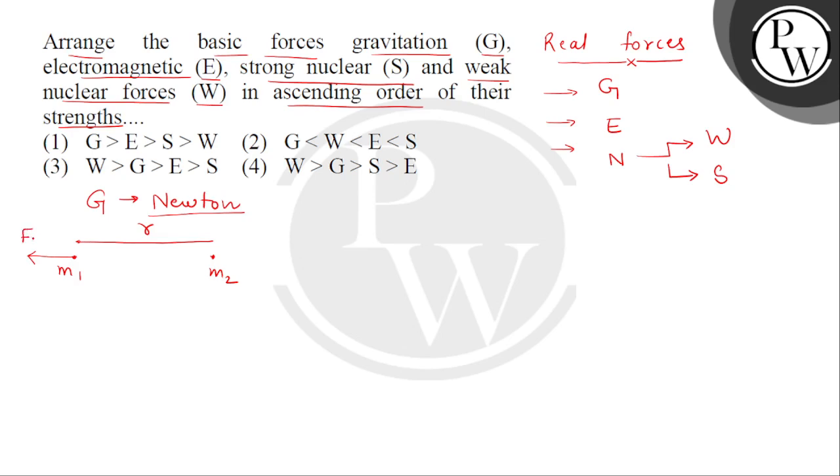This force is force on second particle by first particle, shown in vector form. And M2 will attract M1 toward itself. This force is force on first particle by second particle. According to Newton, the magnitudes of both forces will be equal because they form an action and reaction pair.